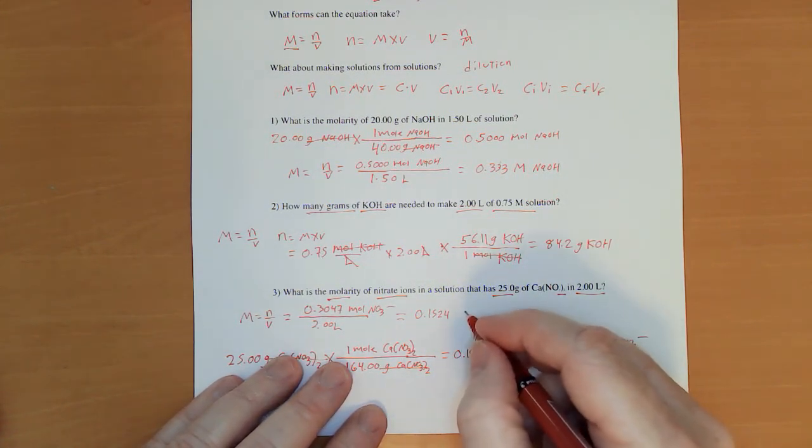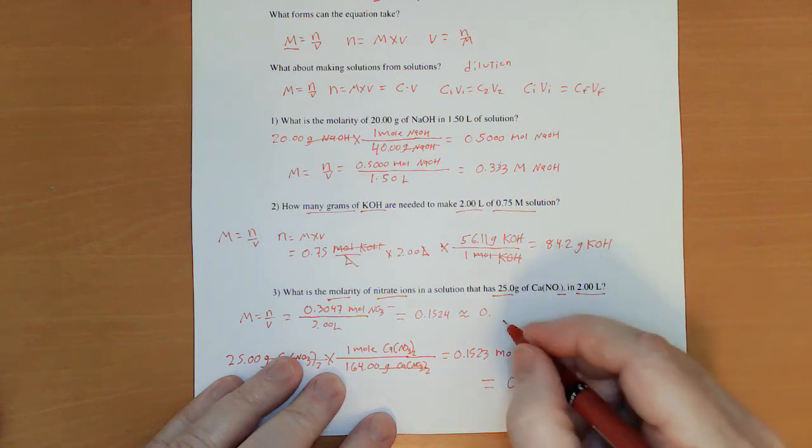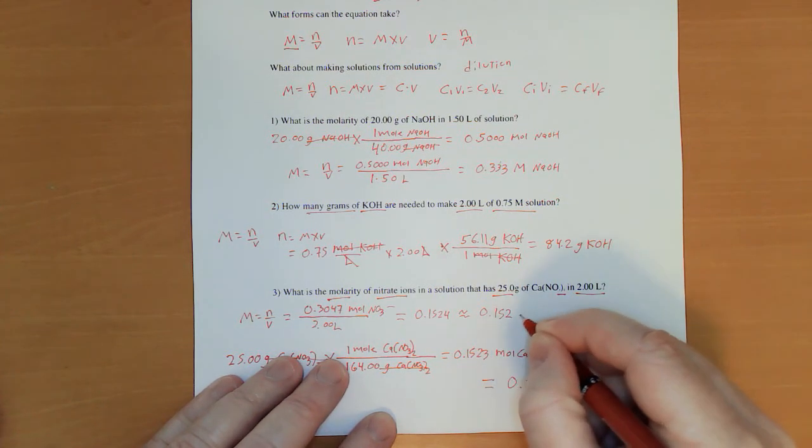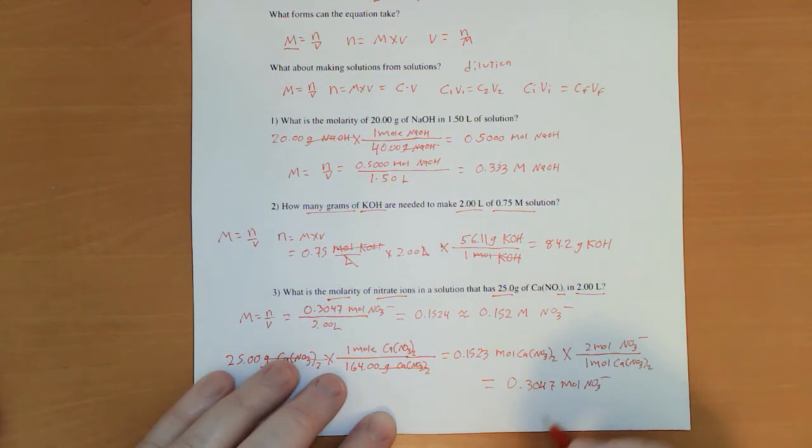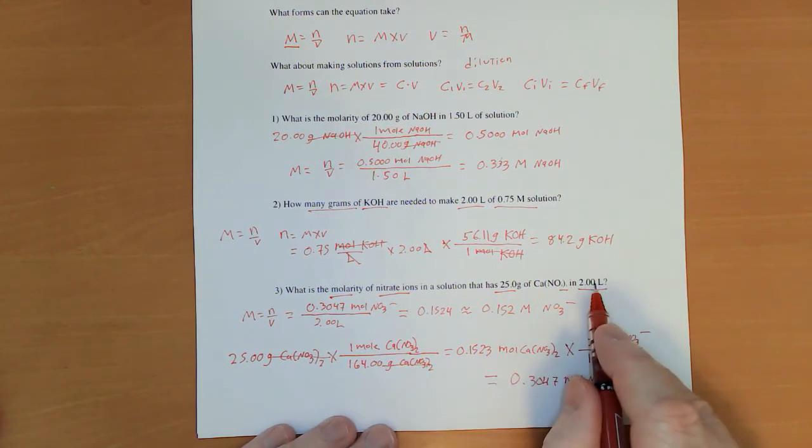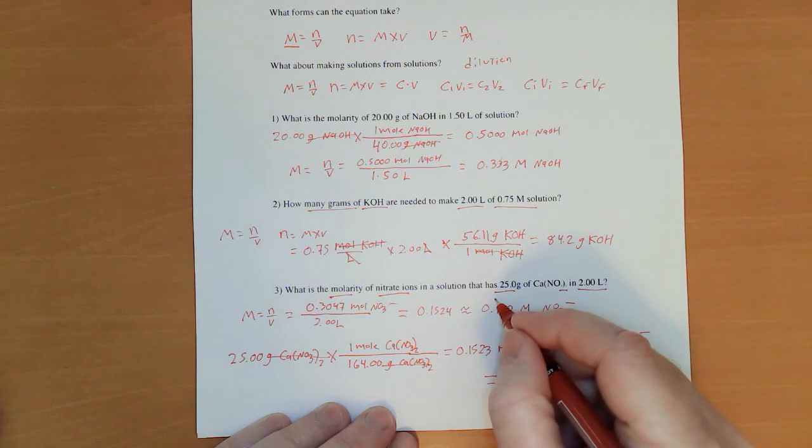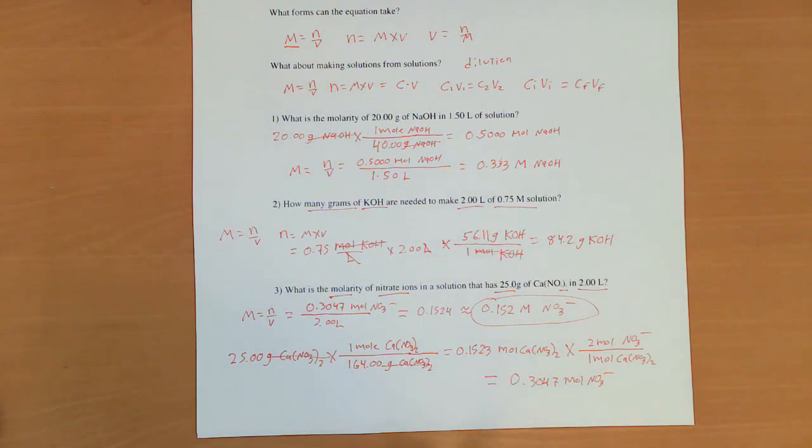Now, I'm going to have to say that's approximately 0.152 molar nitrate to stick with 3 sig figs. That's got 3 sig figs. That's got 3 sig figs. That's got 3 sig figs. So my final answer should have 3 sig figs.